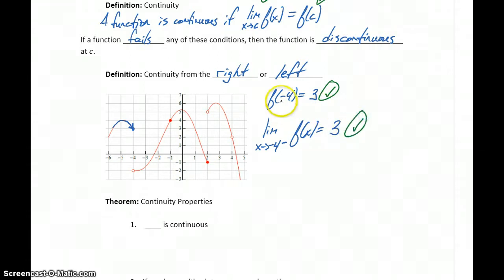That's another condition met. The function exists, is defined there. The limit exists, and since those values are equal to each other, we can say that F is continuous from the left at X equals negative four.